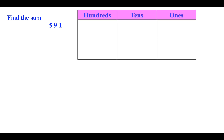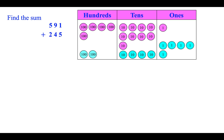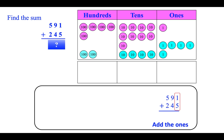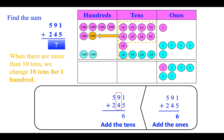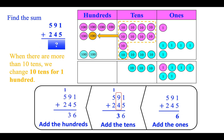Find the sum. Five hundred ninety-one plus two hundred forty-five. First, we add the ones: one plus five is six. Next, we add the tens: nine plus four is thirteen. When there are more than ten tens, we change ten tens for one hundred. We add one hundred to the hundreds place. Now we are left with three. Lastly, we add the hundreds: one plus five plus two is eight.